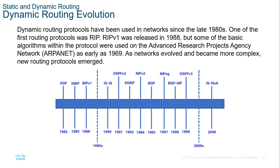We have a few routing protocols based on our timeline — things like EIGRP, RIP version 1, OSPF. The most common OSPF we'll use is OSPFv3, created in the early 2000s. We also have BGP and RIP v2. Notably, all of the main routing protocols were developed in the 1990s, and we're still using routing protocols from 20-plus years ago.